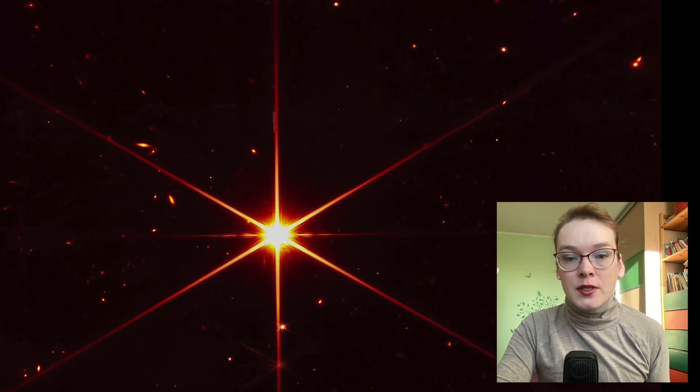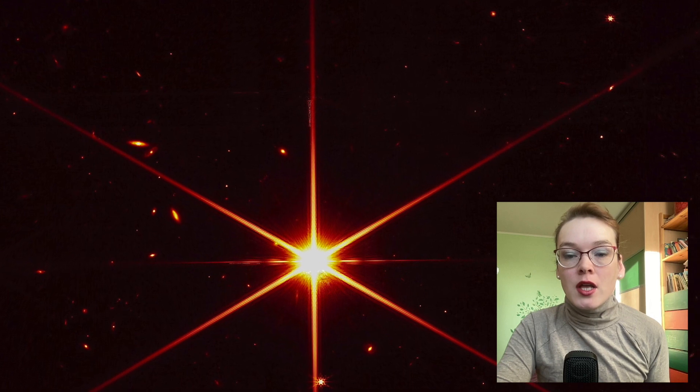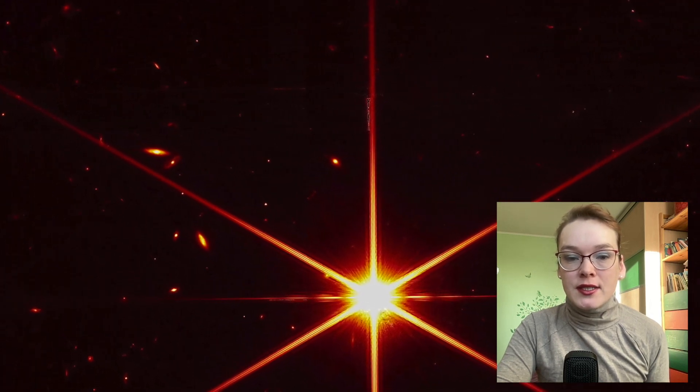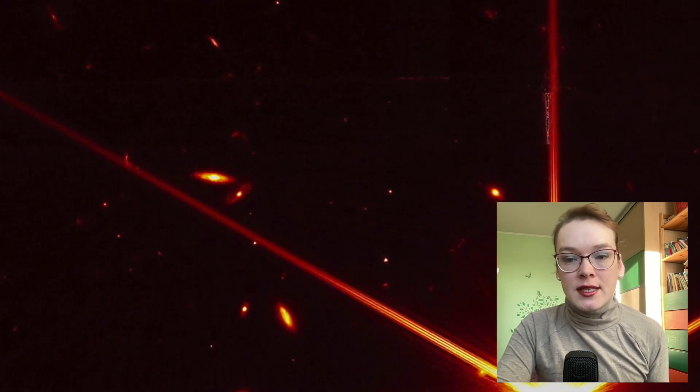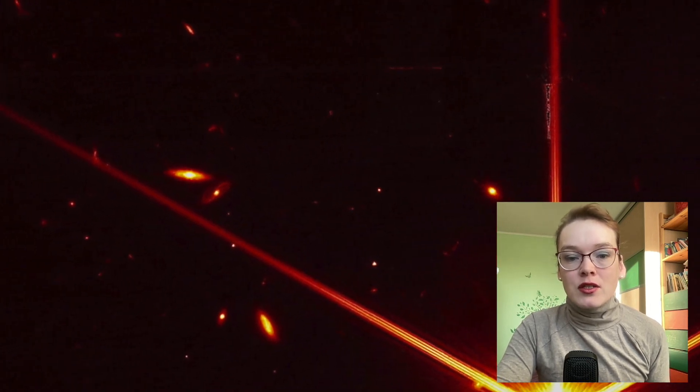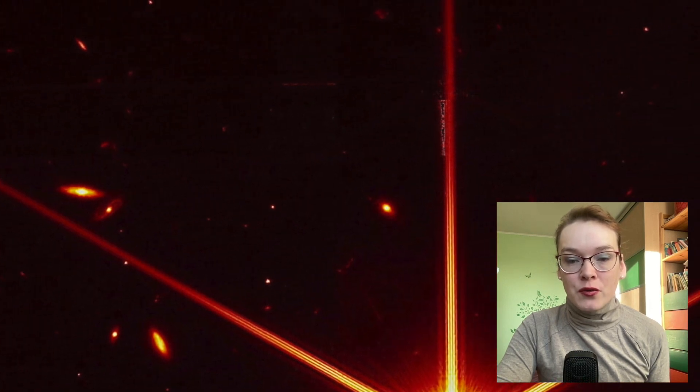But besides the stars, the image taken by James Webb also shows many beautiful galaxies that are billions of years away from us. You can distinguish their shape. You can see their spiral arms. The telescope even recorded the merger of two galaxies.